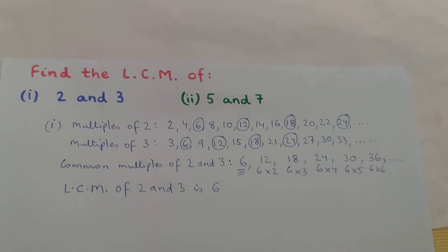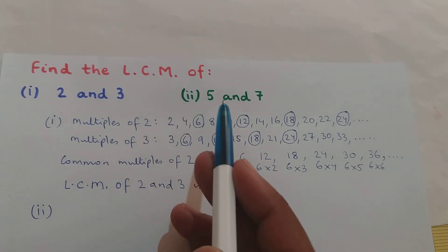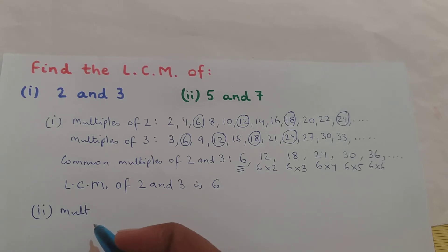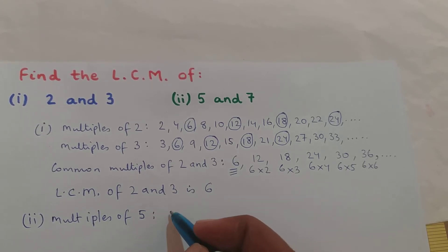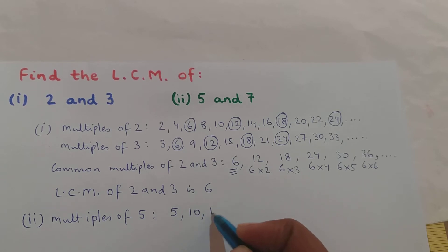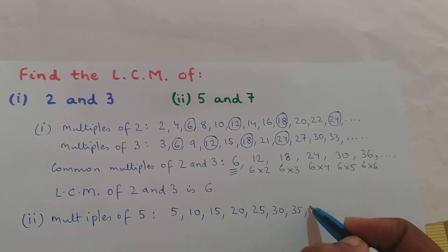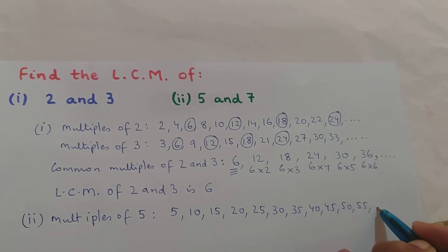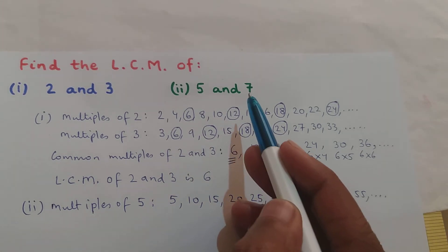Now let us solve the second question. Here I have to find the LCM of 5 and 7. So first I will write down the multiples of 5. The multiples of 5 are: 5, 10, 15, 20, 25, 30, 35, 40, 45, 50, 55, and so on. So I have written down a few multiples of 5.